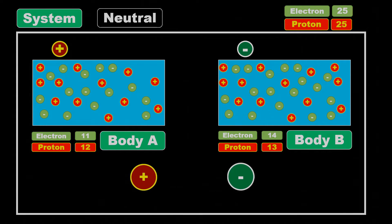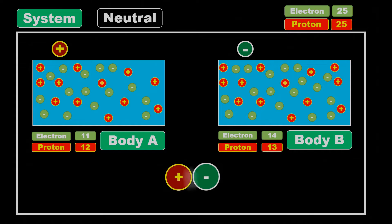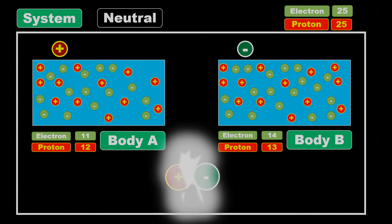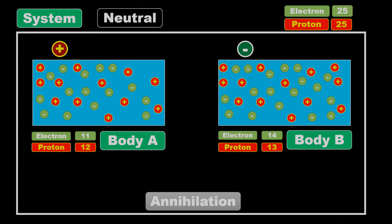In addition, when two opposite charged particles collide, they can convert their mass into energy, a process called annihilation. In this case, the net charge of the charged particles that are destroyed will still be zero.